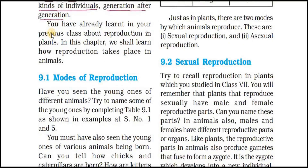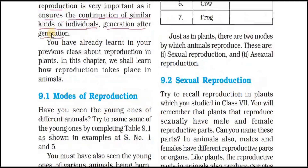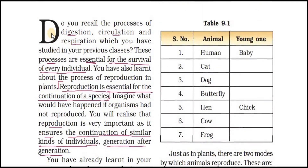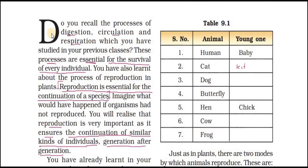You have seen the young ones of different animals. In this table you can see: a human baby is called a baby, the cat's young one is called a kitten, dog's young one is called a puppy, a butterfly's young one is called a nymph, a hen's young one is called a chick, a cow's young one is called a calf, and a frog's young one is called a tadpole.